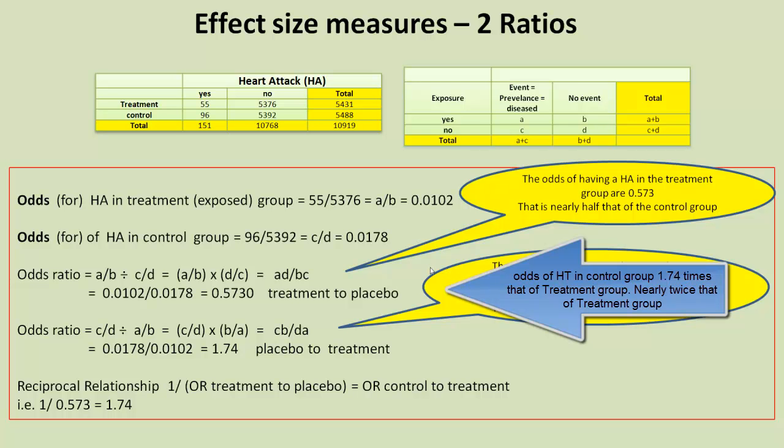Also, there is a relationship between these two, the treatment to placebo odds ratio and the placebo to treatment odds ratio. One is reciprocal of the other. So, you can just divide one by one value over one gets the other value, so you don't have to work out both.